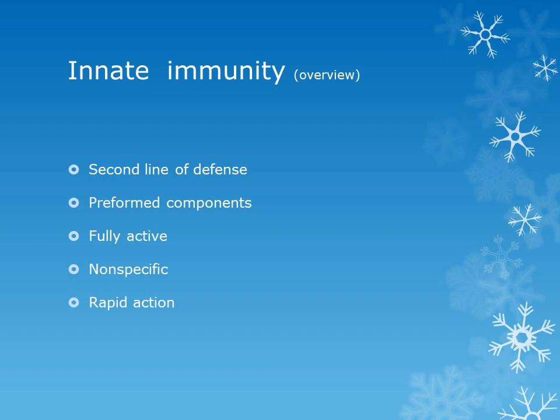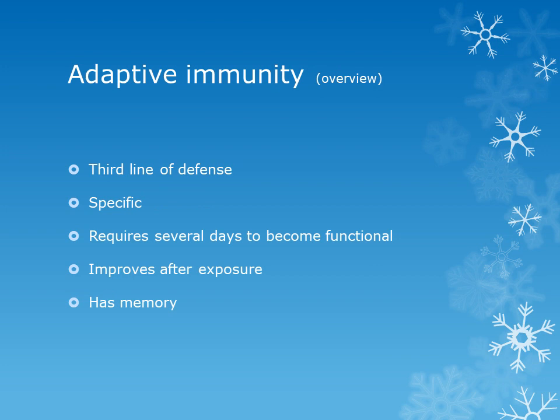Innate immunity is highly non-specific. Now for adaptive immunity: it gives highly specific protection against various microorganisms — it is the third line of defense. However, it has one drawback: it requires a few days to become fully functional, compared to innate immunity which is functional immediately when the microorganism gains entry into the human body.